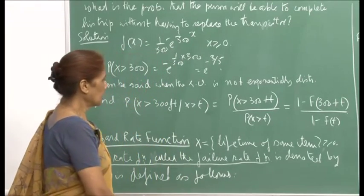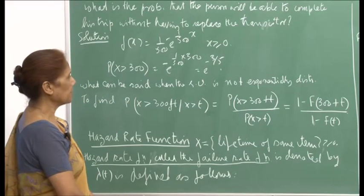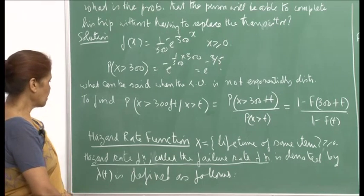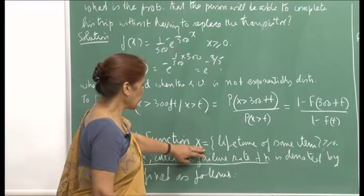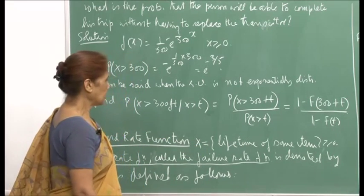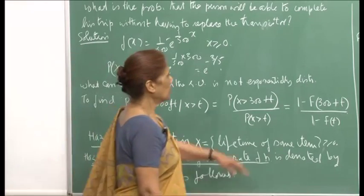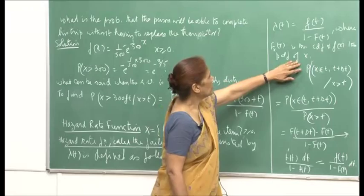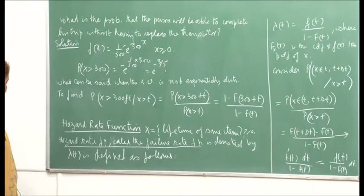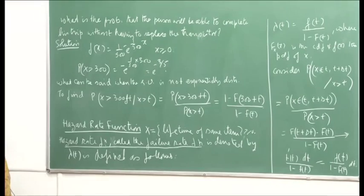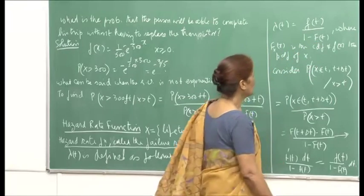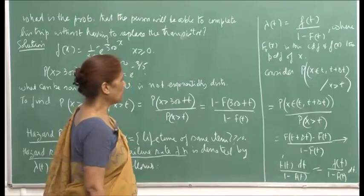Another useful concept for exponential random variables is the hazard rate function, also called the failure rate function. If x is a non-negative random variable representing the lifetime of some item, with PDF small f and CDF capital F, then the hazard rate function lambda(t) is defined as small f(t) divided by 1 minus capital F(t).